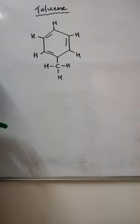So, let us learn how to calculate the total number of sigma and pi bonds in toluene. First of all, you have to know the structure of toluene. So, here I have the structure of toluene.